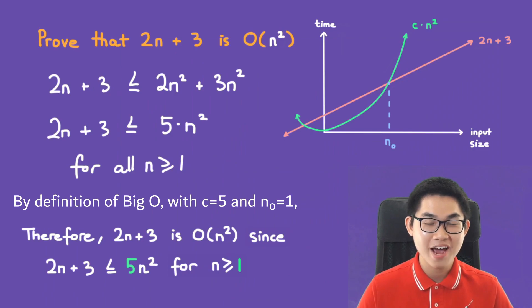Last but not least, we always write our conclusion. So by definition, therefore 2n plus 3 is O(n²) since 2n plus 3 is less than or equal to 5n² for n greater than or equal to 1.